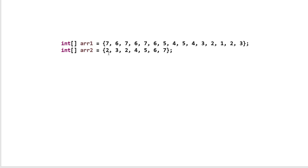One approach is brute force: start from index 0 and one by one check if the current value equals the target. For example, finding 2 — check first element, is it 2? No. Next, is it 2? No. And so on, checking each element one by one. In this case the time complexity is O(n).